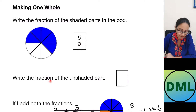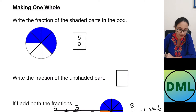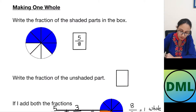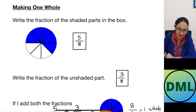Now write the fraction of the unshaded part. Unshaded part means the part which is not shaded. So how many parts are not shaded? 1, 2 and 3 parts are not shaded. We have the same total parts — 8. So 8 will come in the denominator and 3 will be written in the numerator because 3 parts are not shaded.